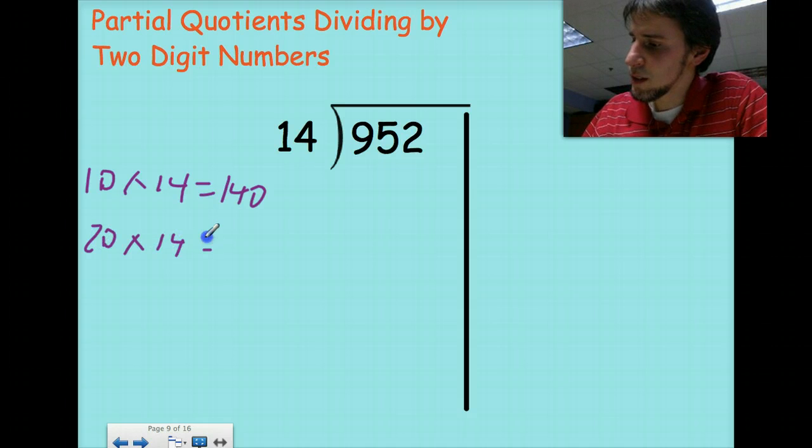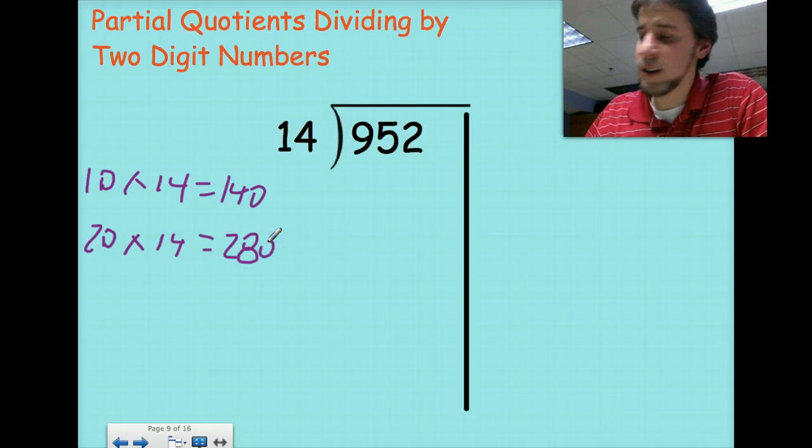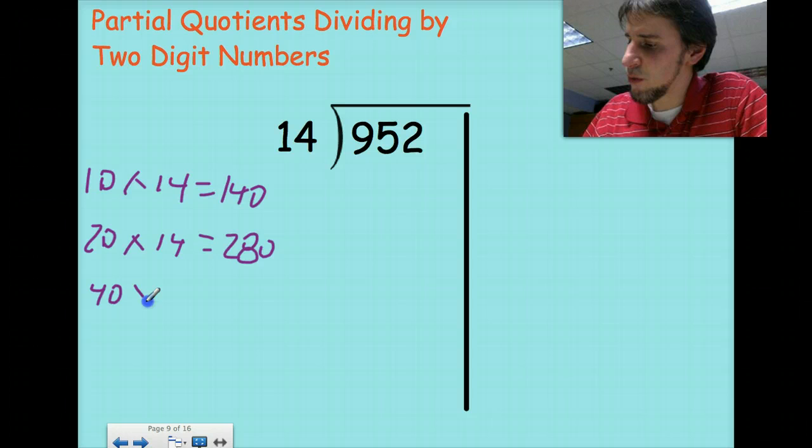Well to double the 14, that's going to give me 28. Just double it in my head, I don't have to figure out what 20 times 14 is. Okay, now I got 40 fourteens. Well, if 20 fourteens is 280, 40 fourteens is just going to be doubling this answer right here. So then that should give me 56.